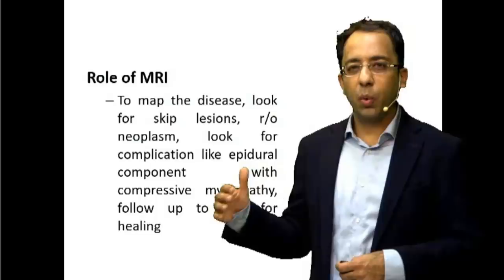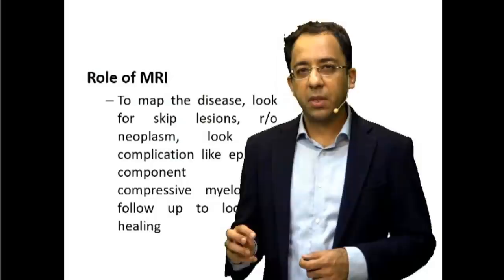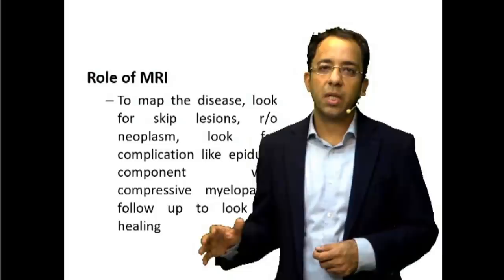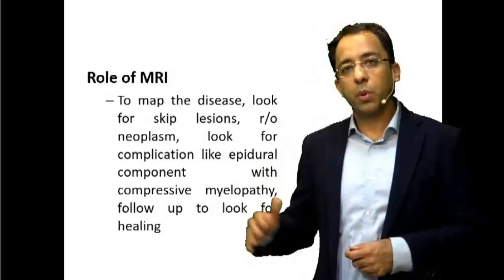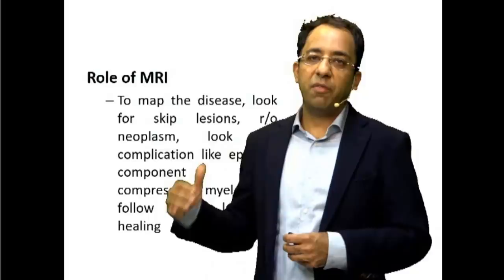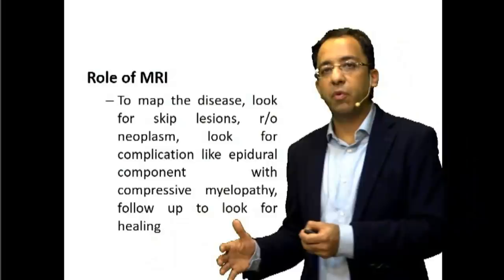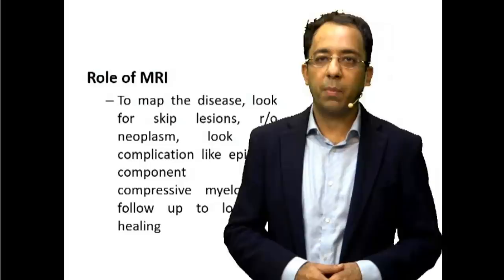On X-ray, if you see an isolated vertebral body collapse with preserved discs, classic radiology thinking points toward trauma or neoplasm. If you see posterior convexity of the vertebra, think of a neoplasm causing vertebral expansion. If you see vertebral collapse with loss of the adjoining disc, think of infective etiologies — like tuberculosis, the classic disease we discussed today.